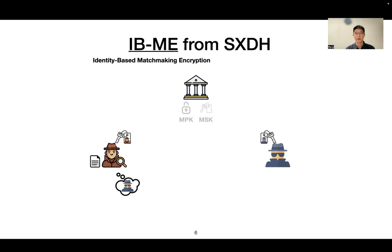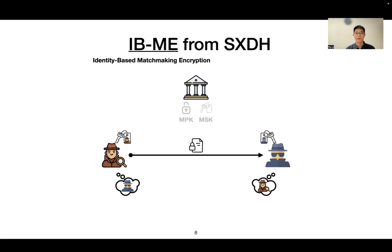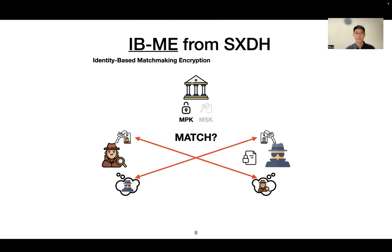Then the sender will specify an identity of the receiver on the fly and encrypt the message with his secret key and the receiver's identity. Once receiving the ciphertext, the receiver will also specify an identity of the sender he wants to receive from. The decryption algorithm will test if the identities satisfy each other. If yes, the receiver will get the correct message.